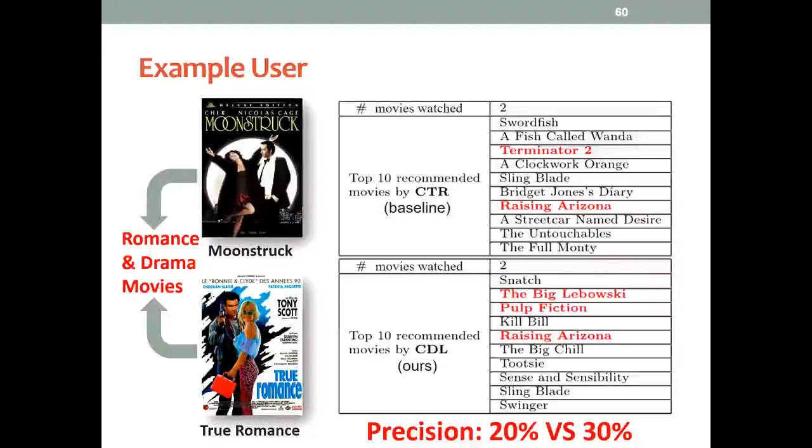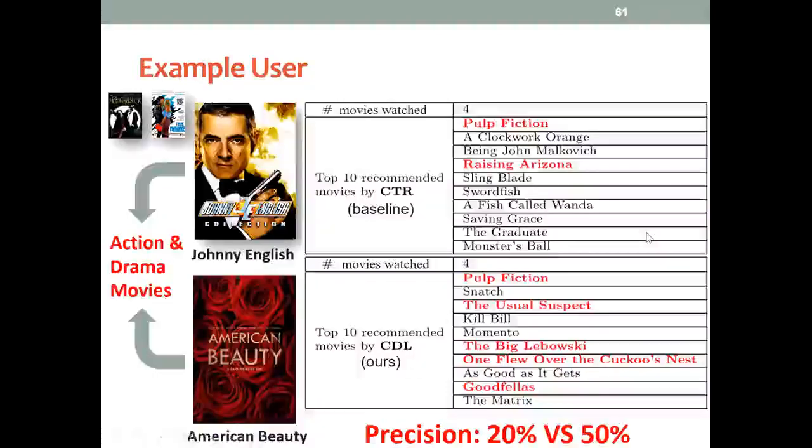This user watched two movies, Moonstruck and True Romance. Note that these are both romance and drama movies. Naturally, both methods would recommend some romance and drama movies for this user. At this point, the precision is 20% versus 30%. As the process goes by, this user watched two more movies, Johnny English and American Beauty.